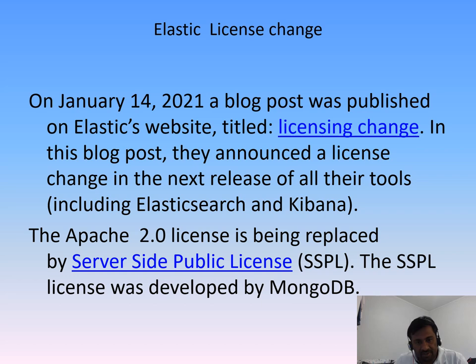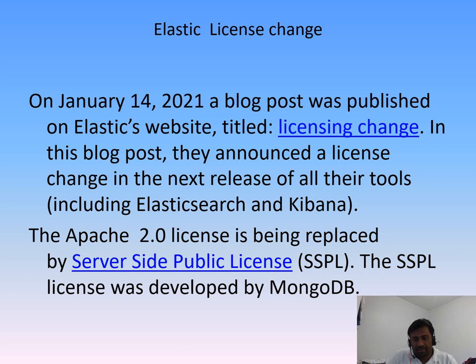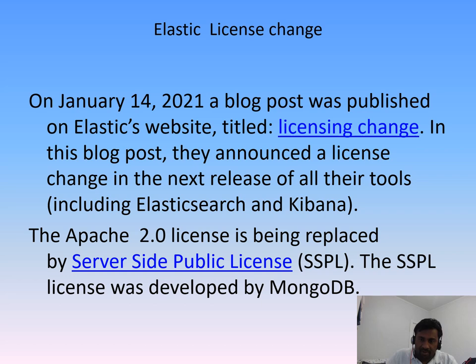On January 14th, Elasticsearch changed their license scheme from open source to Server-Side Public License. There was a competition between Elasticsearch and Amazon Web Services. Amazon was providing a managed Elasticsearch service through AWS, making more money than Elastic Cloud. Amazon was not paying any money to Elastic Cloud for their software and was not using their cloud service, making more revenue while not giving any monetary benefit for further development.